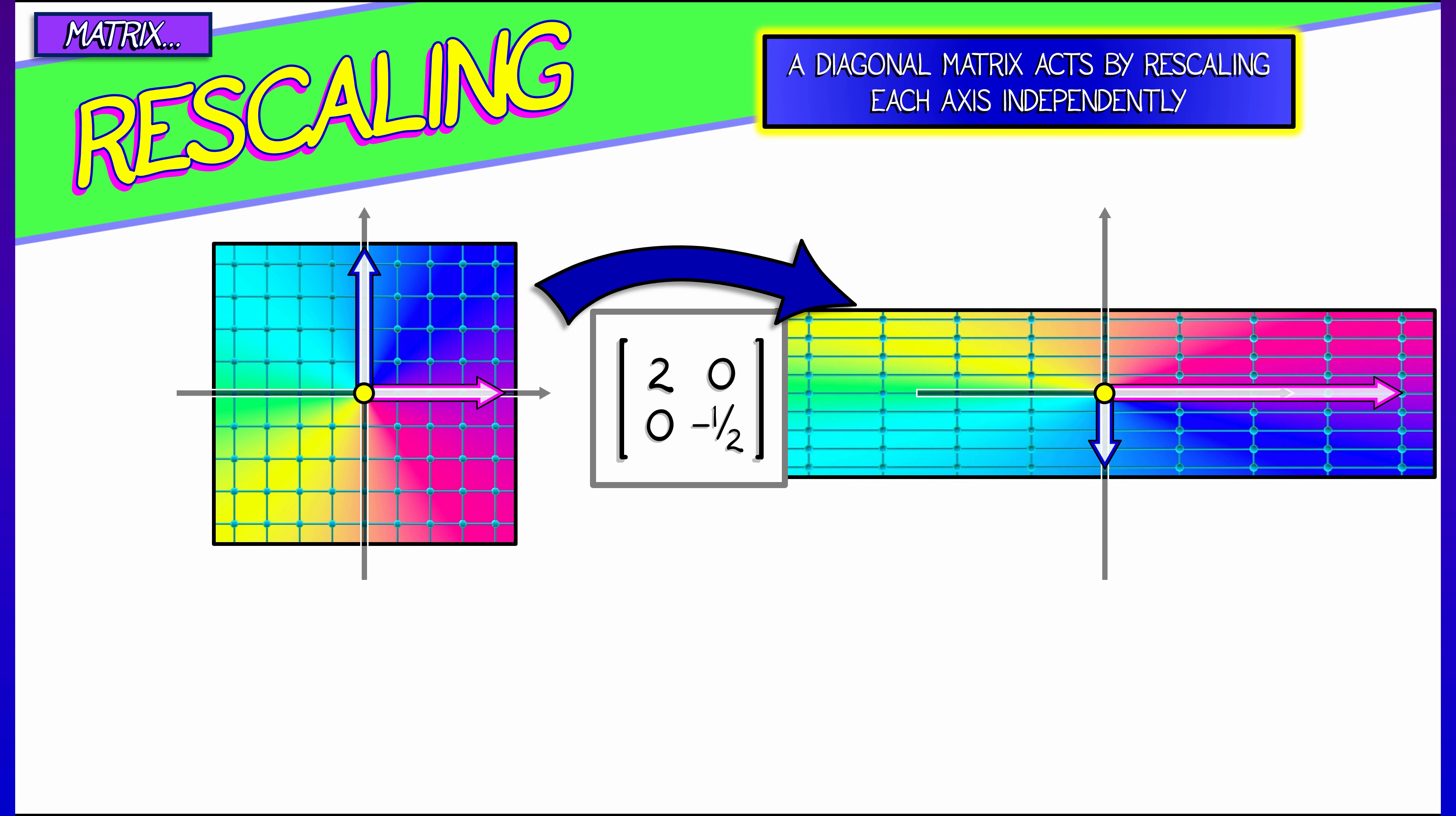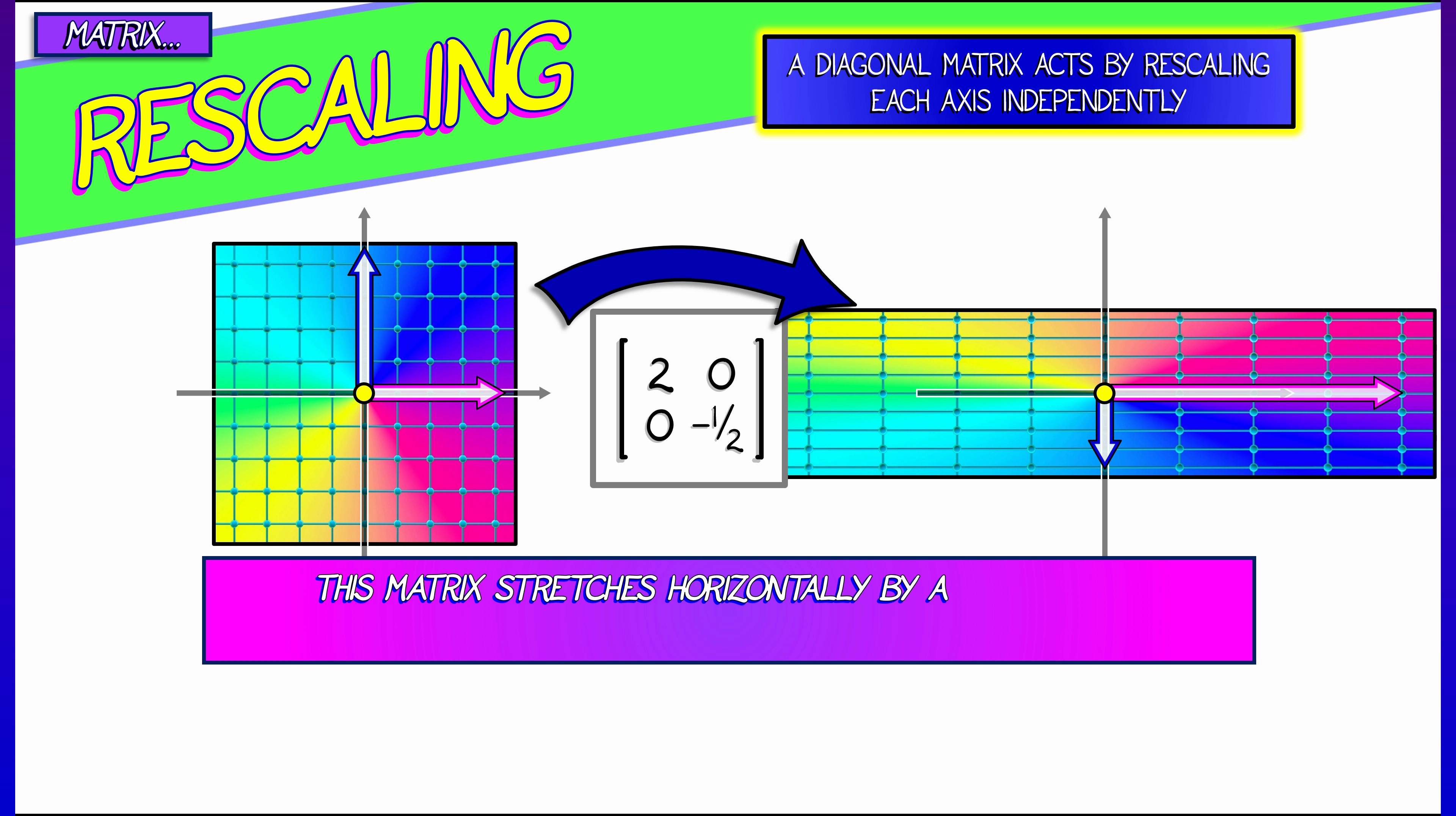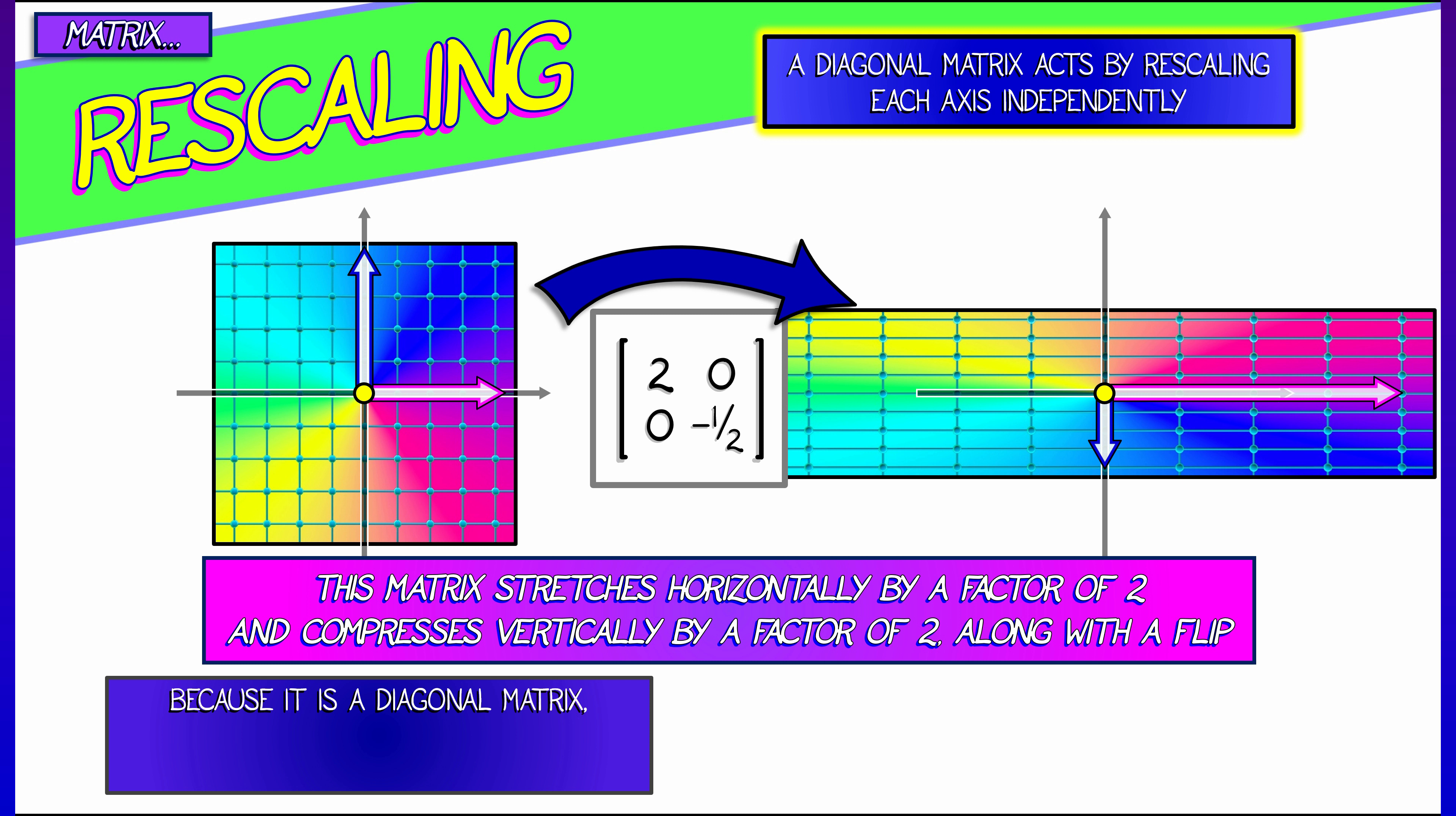By linearity of the transformation, it does the same thing everywhere. It stretches out the x components horizontally by a factor of 2. It squeezes the vertical components by a factor of 2 and then flips it over. It takes positive y components to negative y components.